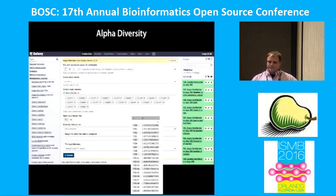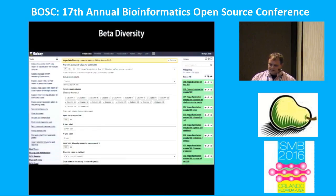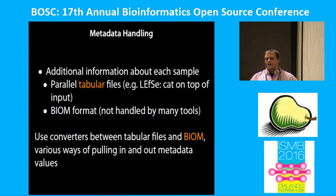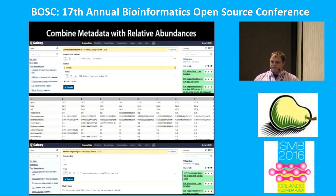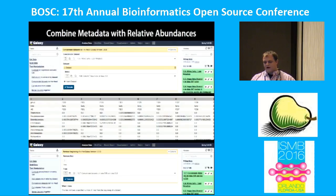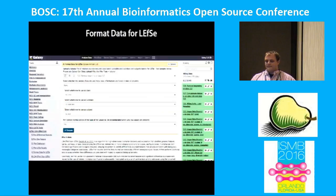Galaxy is able to determine alpha diversity and beta diversity. One of the big problems dealing with metagenomics samples is how do you handle the metadata inside of Galaxy. A lot of times these tools only accept tabular files. There's also a nice BIOM format that's now available, and we have converters inside of Galaxy to convert between these two formats. We can add the metadata directly on top of our abundance calls in tabular format.